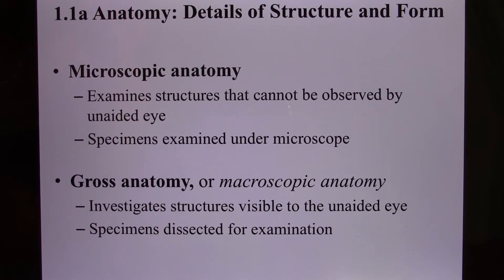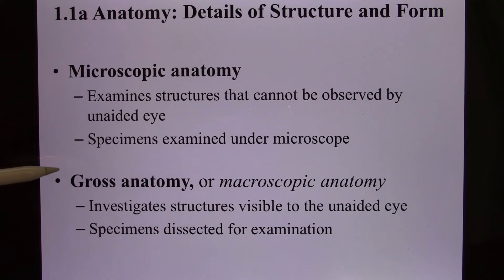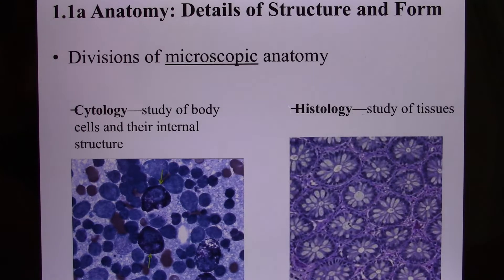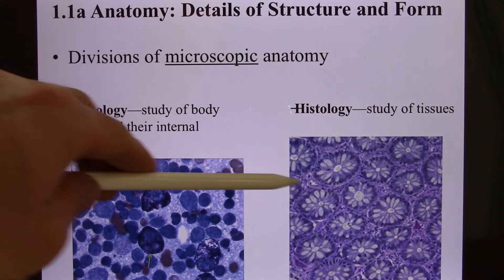Anatomy can be divided into microscopic anatomy, which uses the microscope, and gross anatomy, which uses your naked eye to identify structures. When we study cells, that is called cytology. But in this class, we mainly focus on histology.